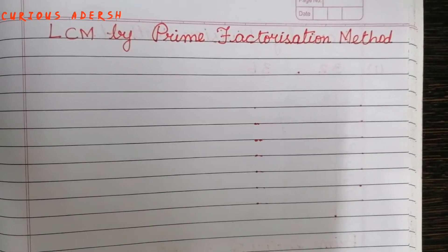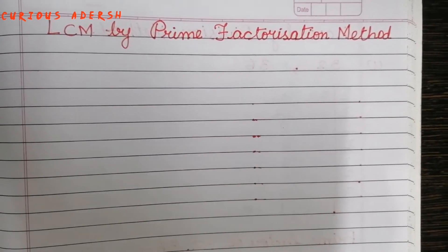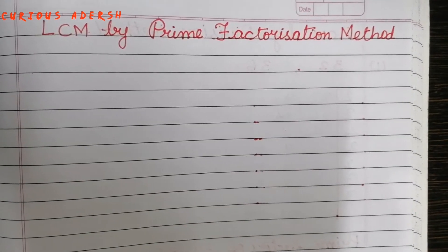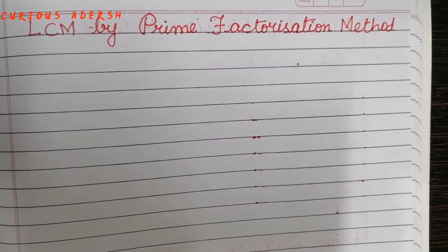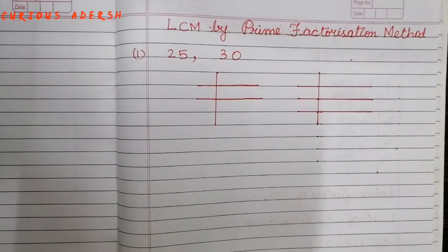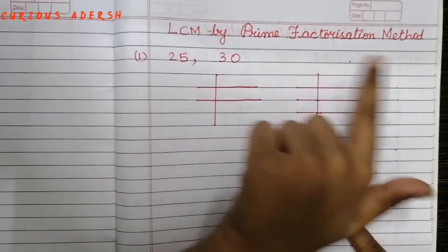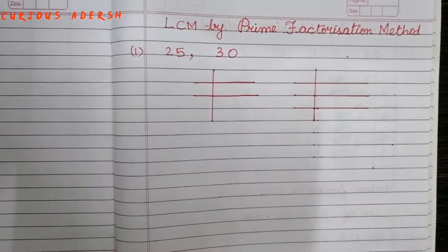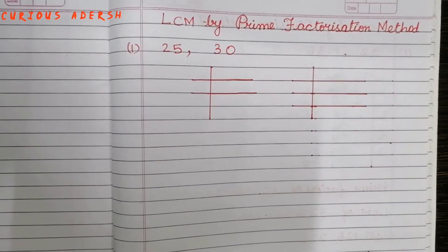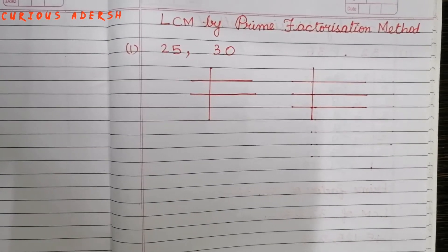Hello everyone, welcome back to Curious Adosh. Today let's see how to find LCM by prime factorization method. Let's learn LCM by prime factorization method for 25 and 30. First we'll find their prime factors separately.